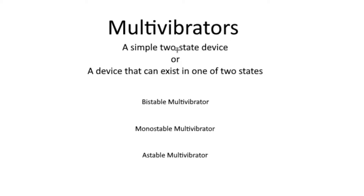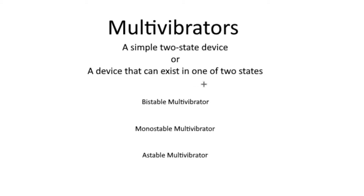What is a multivibrator? The technical definition is a simple two-state device. A more refined definition is a device that can exist in one of two states and will change states depending on some kind of condition — usually that involves a trigger and some other condition. Those conditions are dictated by the type of multivibrator.